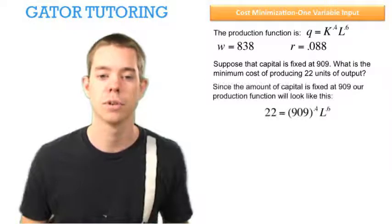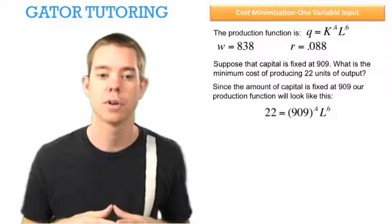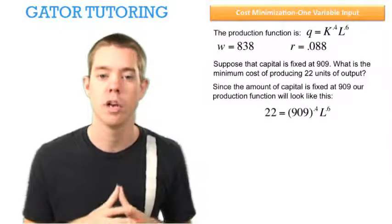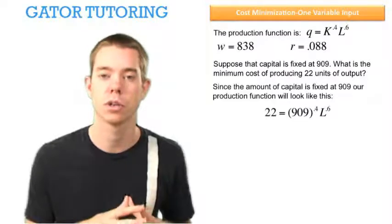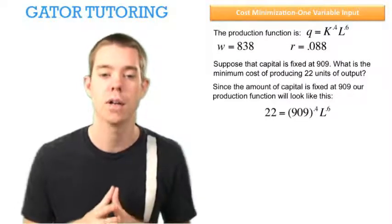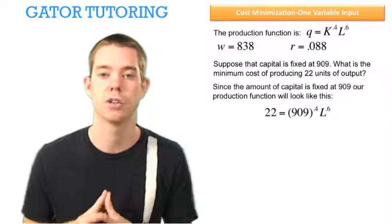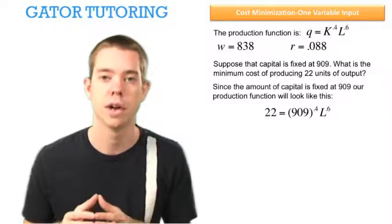Since the amount of capital is fixed at 909, our production function will look like this. We want to produce 22 units, so we plug in 22 for Q, and we know that capital is fixed at 909, so we plug in 909 for K.